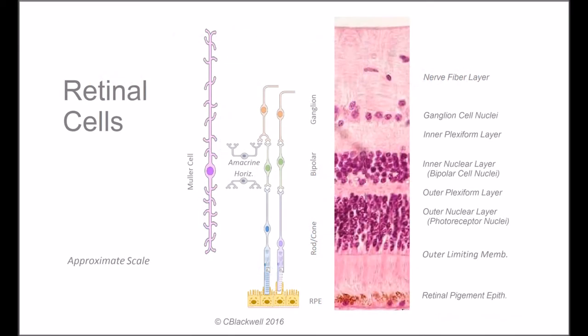This diagram and microscope view shows where the main types of retinal cells are located and how they connect to one another.